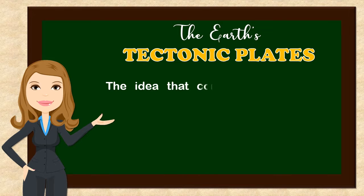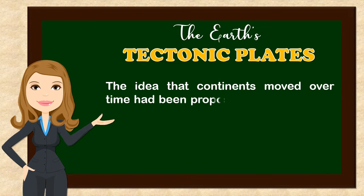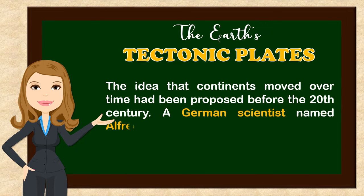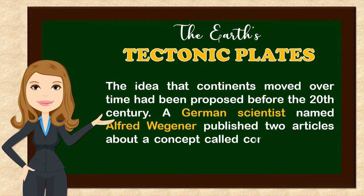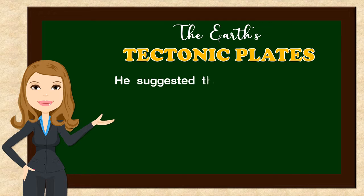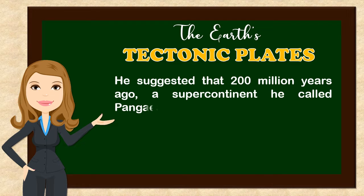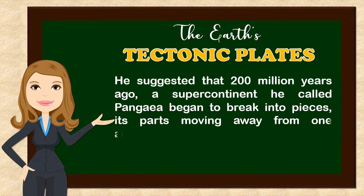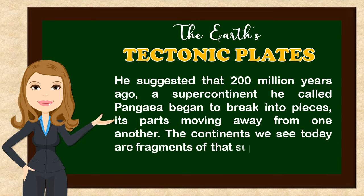The idea that continents moved over time had been proposed before the 20th century. A German scientist named Alfred Wegener published two articles about a concept called Continental Drift in 1912. He suggested that 200 million years ago, a supercontinent he called Pangaea began to break into pieces, its parts moving away from one another. The continents we see today are fragments of that supercontinent.